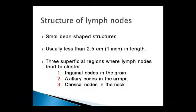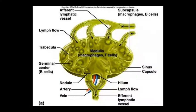Lymph nodes are made in clusters. The structure shows: afferent lymphatic vessels, lymph flow, trabeculae, and a germinal center where there are B cells. There are nodules, and artery and vein supply at the hilum region. There are four capsular regions containing macrophages and B cells. In the medulla, there are macrophages and T cells.